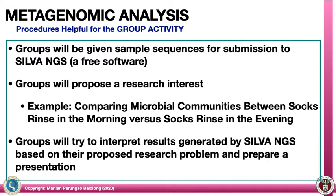Groups will propose a research interest — for example, comparing microbial communities between socks rinsed in the morning versus socks rinsed in the evening. You can think of a more witty topic, as long as you'll be comparing two communities. The groups will then try to interpret the results generated by SILVA NGS based on their proposed research problem and prepare a presentation.